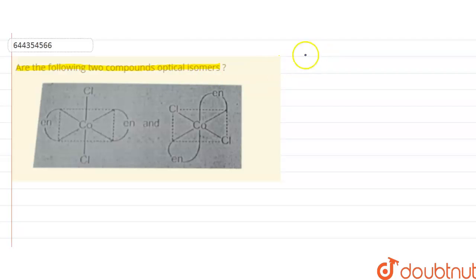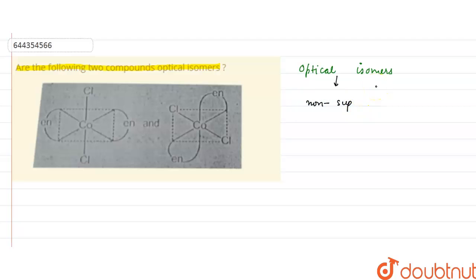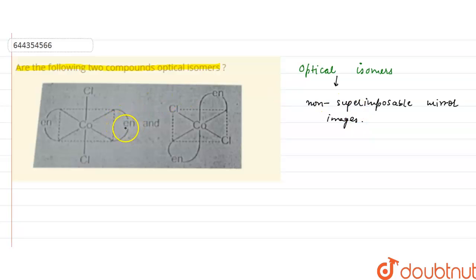Optical isomers are the non-superimposable mirror images of each other. It means if a compound and its mirror image are non-superimposable, then it can have optical isomerism.